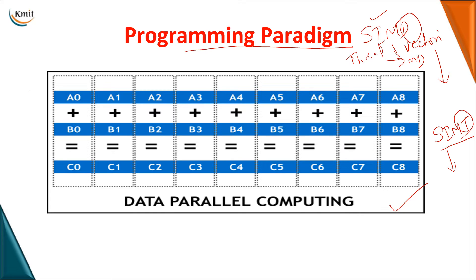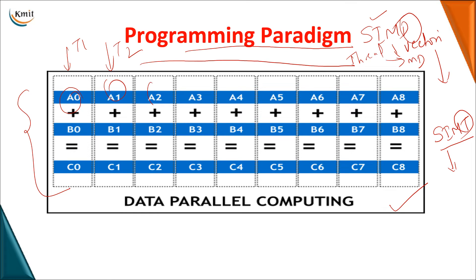For example, with SIMD one thread performs all operations, such as addition across data. With SIMT, multiple threads each handle different data under the same single instruction. SIMD uses only one thread to perform all these operations, whereas SIMT uses multiple threads.